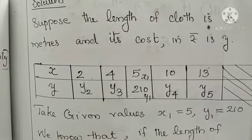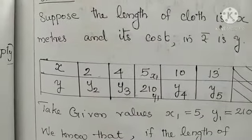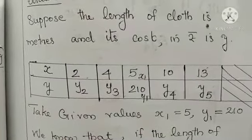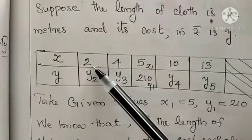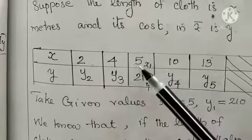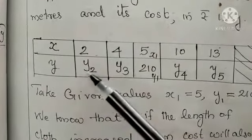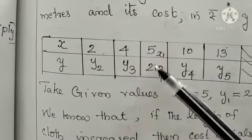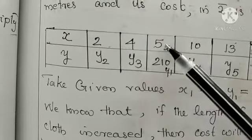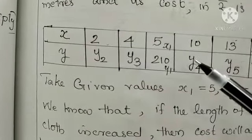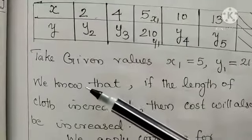Here we can solve for these unknown values. Suppose the length of cloth is x meters and its cost we can take as y values. So we can tabulate x values to be 2, 4, 5 (it is given), 10, 13. Y values to be found out: y2, y3. Given values we took as here, x1 and y1. Then y4, y5. Use the condition of direct proportion, we can write x1 by y1 is equal to x2 by y2.